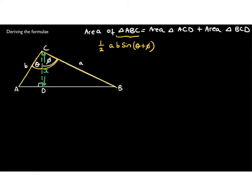The area of a triangle is a half multiplied by the sine of the angle in between the two sides. For triangle ACD, using two sides and the angle between them, the area is a half times b times X times sine theta. For triangle BCD, the area is a half times a times X times sine phi.